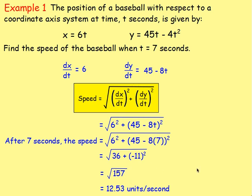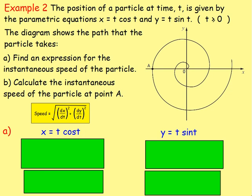Example 2: The position of a particle at time t is given by x = t·cos(t) and y = t·sin(t), where t > 0. The diagram shows the path the particle takes. Part a: find an expression for the instantaneous speed; part b: calculate the instantaneous speed at point A.